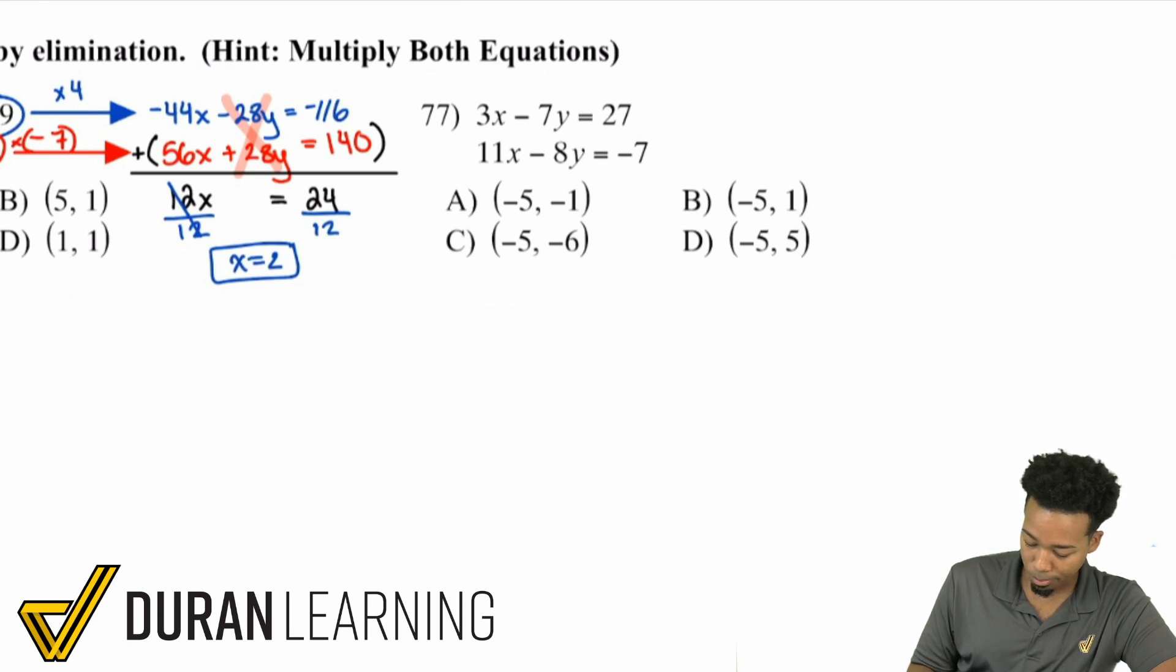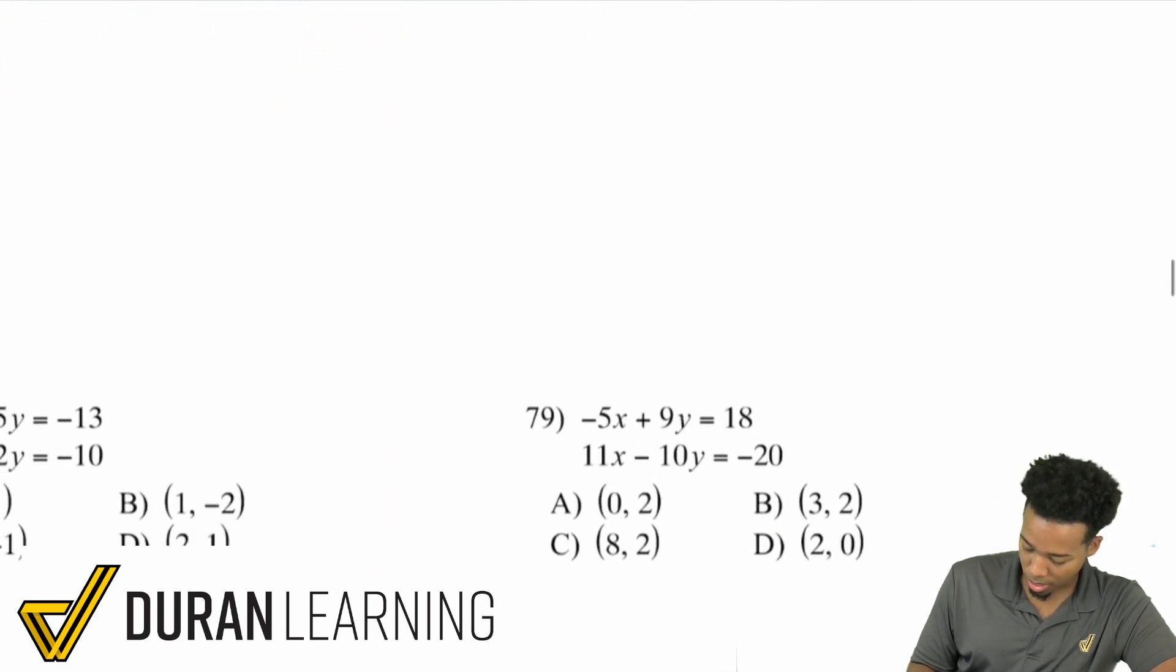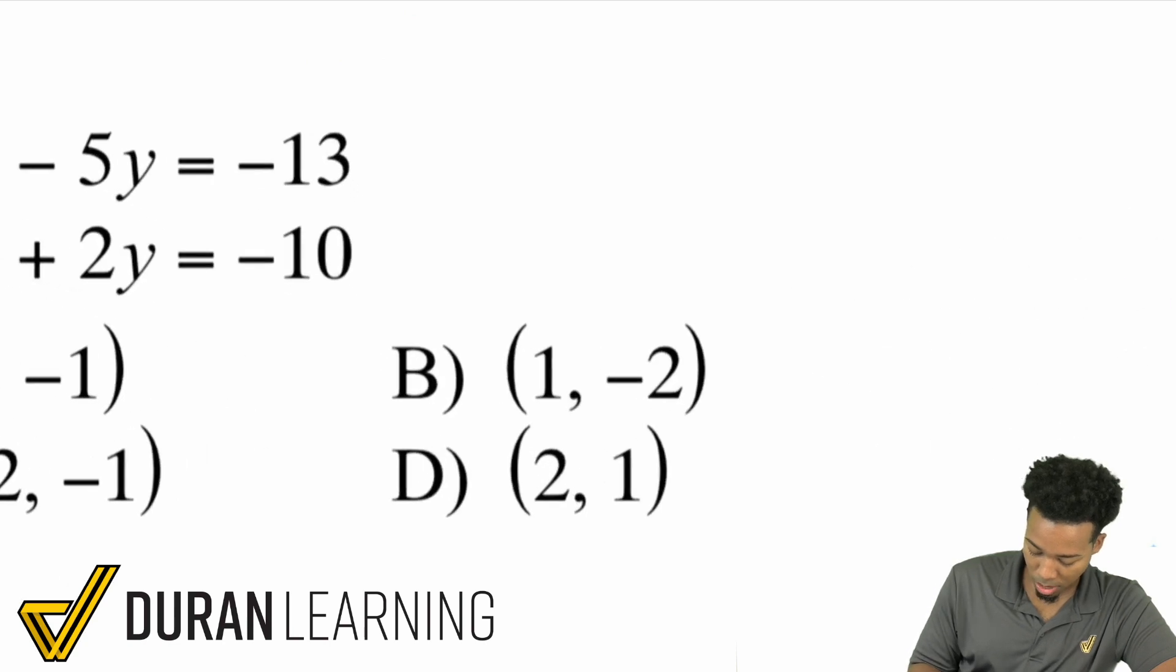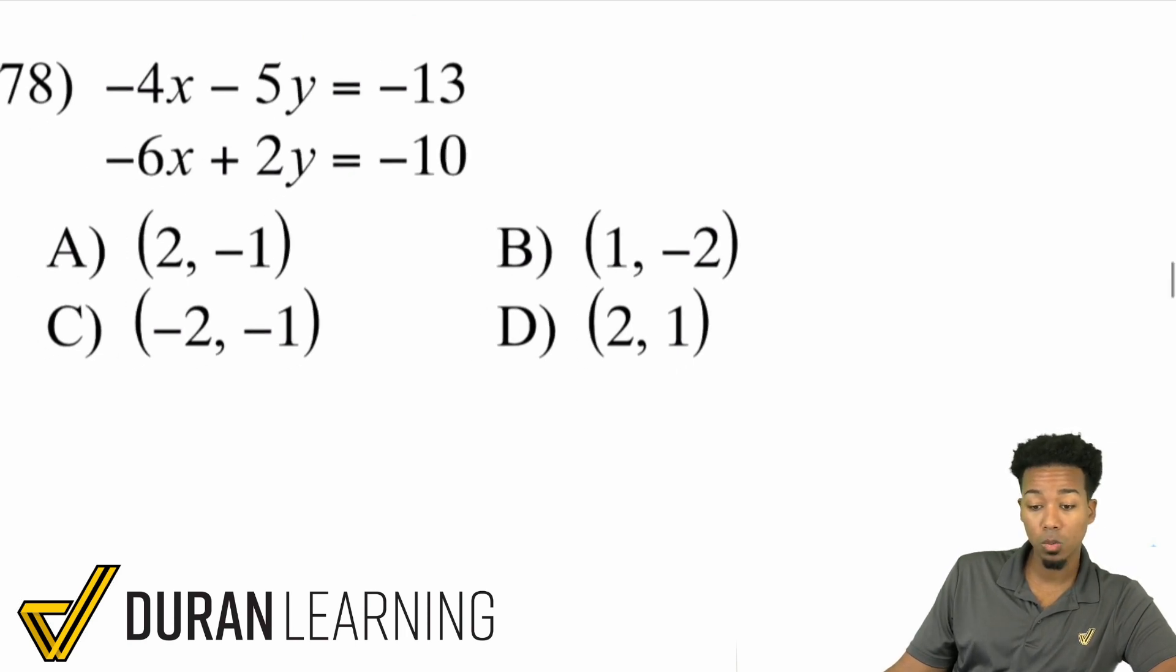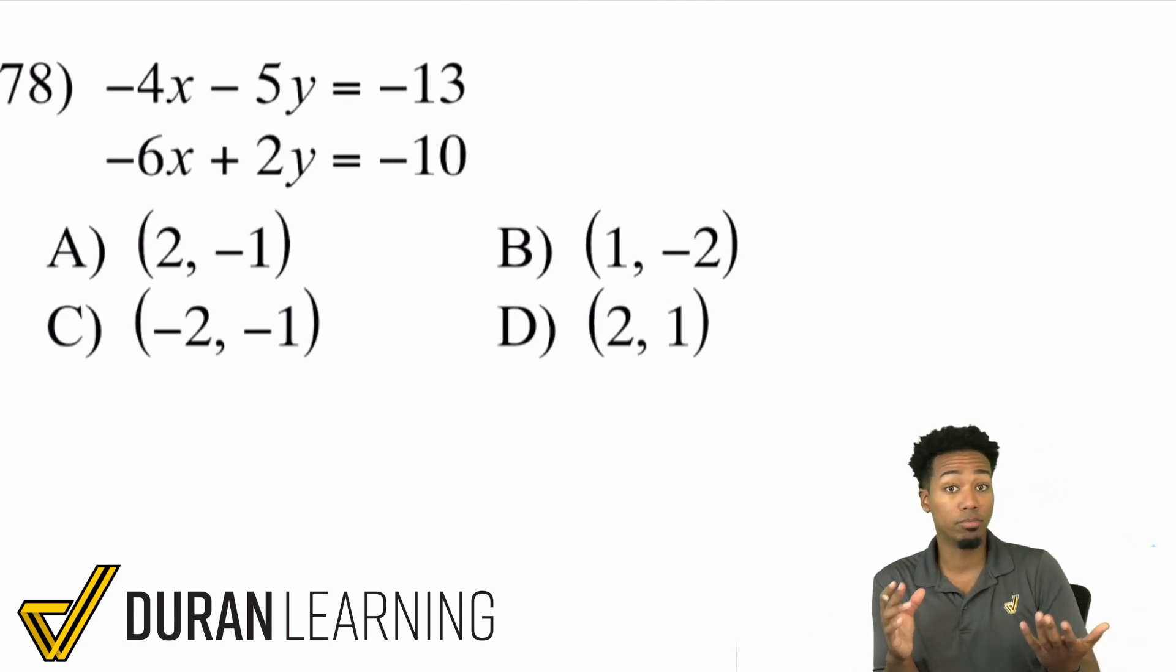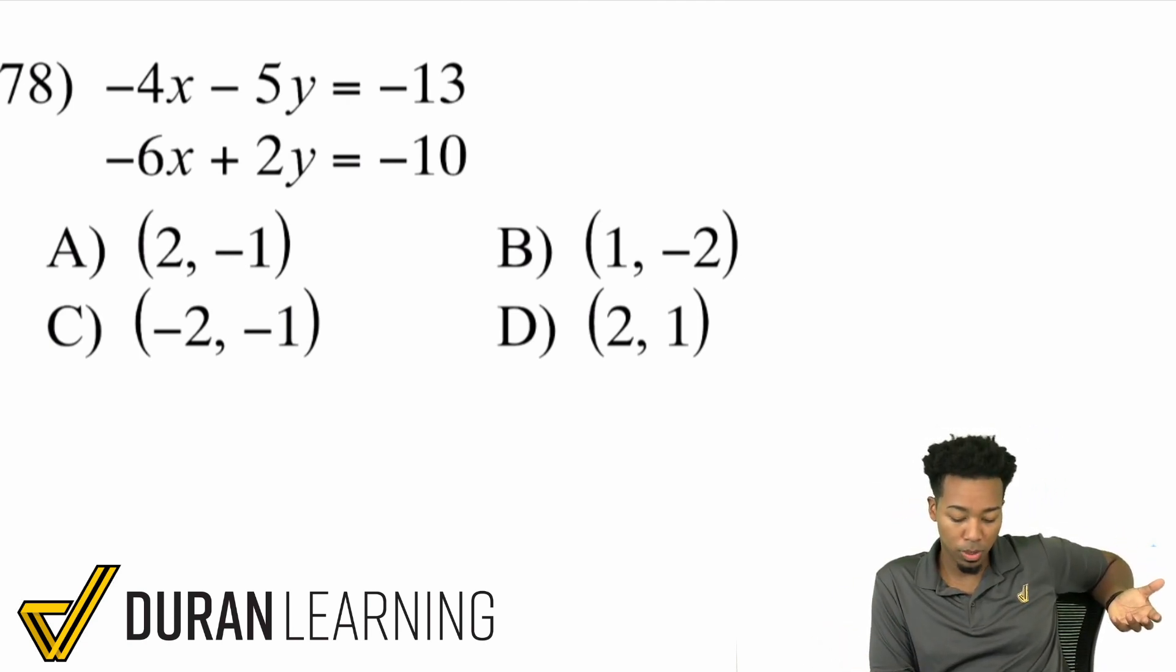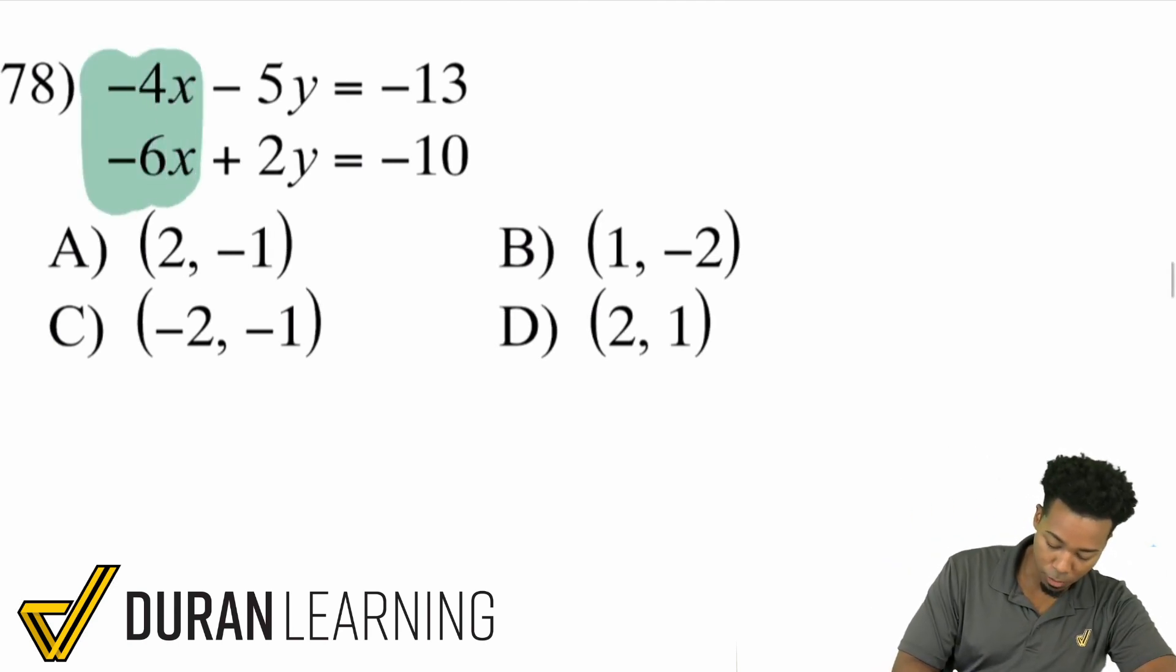Let's go ahead and check out. Let's take a look at 78. So, when it comes to number 78, I'm looking at this and I'm saying, hey, you know, which variable do I want to eliminate first? The x or the y? It really doesn't matter which one. All you have to do is make sure to pick the more convenient situation.